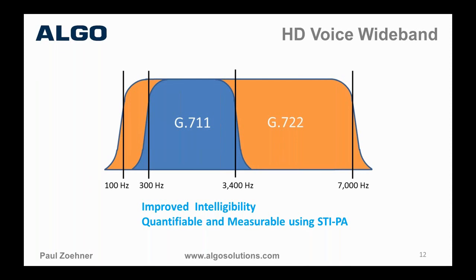If you have an opportunity to page using the wideband codec, I encourage it — you will get better intelligibility. The extension at the bottom end from 300 Hz down to 100 Hz is what makes my voice sound different over the telephone than in person, but that lower band doesn't contribute to intelligibility. For high intelligibility paging, many speakers will actually cut off that low end and focus on the high-frequency content, especially in reverberant environments.